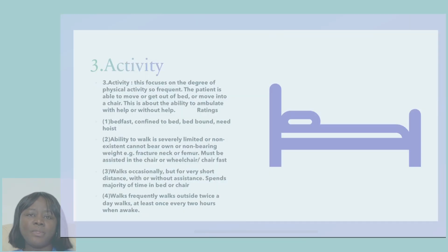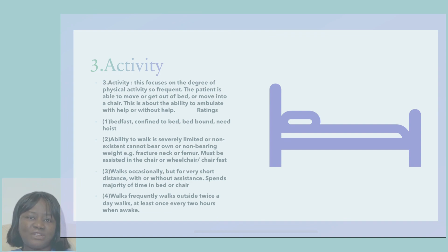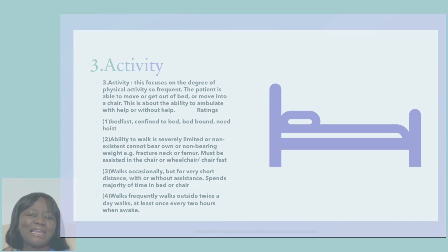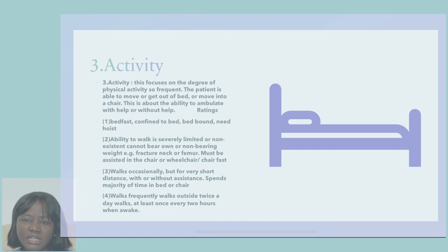Now we move to activity. Activity and mobility can sometimes cause confusion between the two. For activity, the focus is on the degree to which the patient is physically active — how frequently are they able to move? Are they able to walk, move in bed, move out of a chair? This is about being physically active, and you score that on a rating of one to four on your chart.